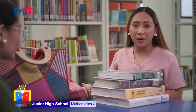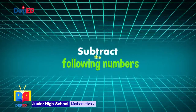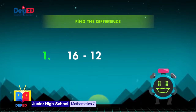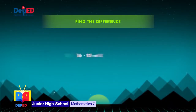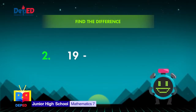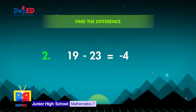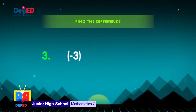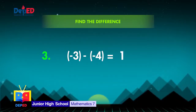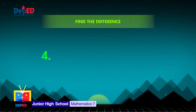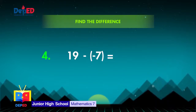Remember, the resulting number in the subtraction process is called the difference. Now it's your turn. Subtract the following numbers. Number 1: 16 minus 12. The difference is 4. Number 2: 19 minus 23. The difference is negative 4. Number 3: negative 3 minus negative 4. The difference is 1. Number 4: 19 minus negative 7. The difference is 26.